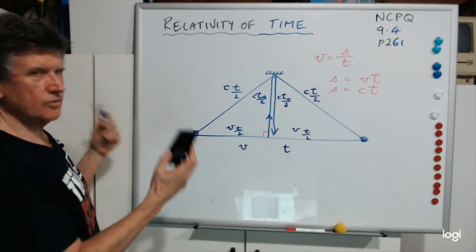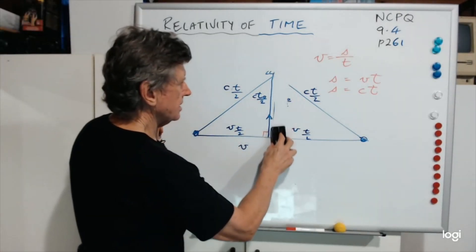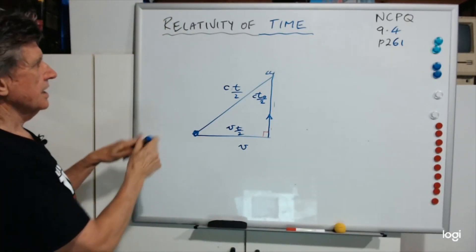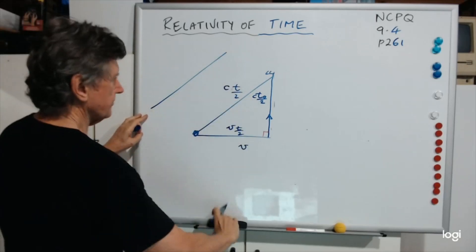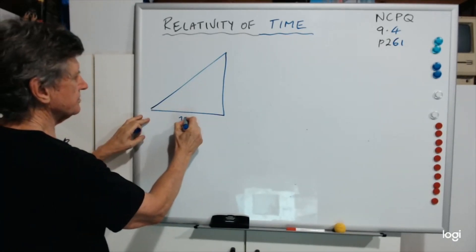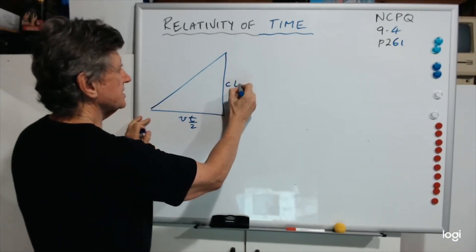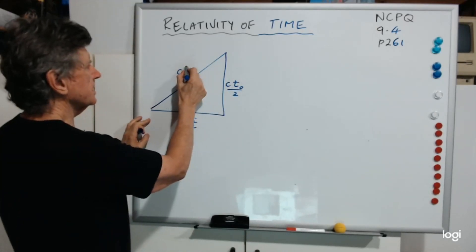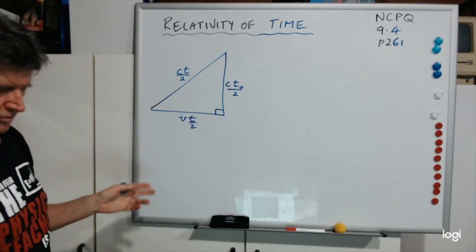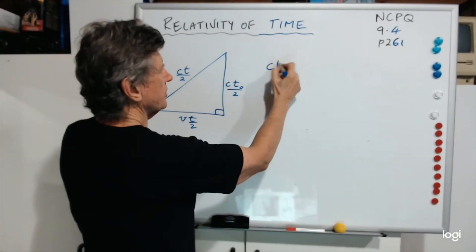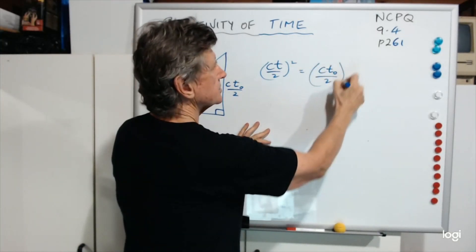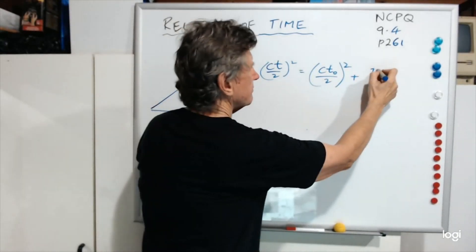I'm going to write that down and do some calculations on it. Here's my triangle — this was VT/2, this was CT0/2 and CT/2. It's a right angle triangle. Now let's write this in terms of Pythagoras' theorem: the square of the hypotenuse equals the sum of the squares on the other sides — so (CT/2)² = (CT0/2)² + (VT/2)².